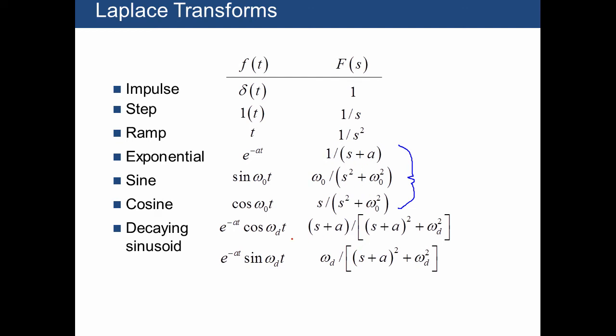And then there's also the decaying sinusoid, which if you recall is just meaning something where you have a decaying exponential envelope and some sort of a sinusoid that's varying within that envelope. And here are the transforms for those.